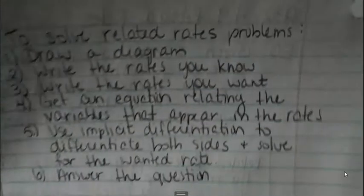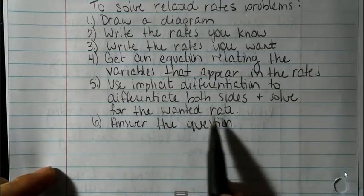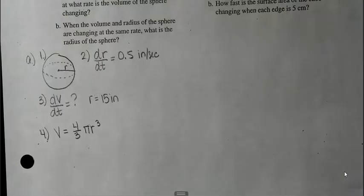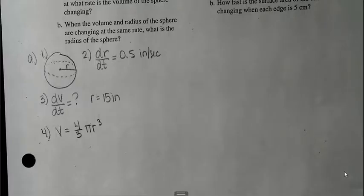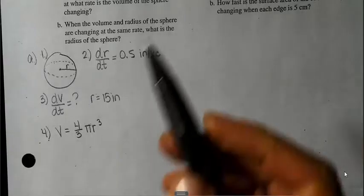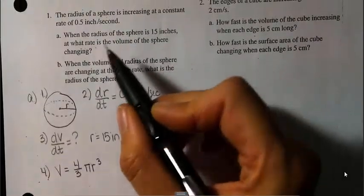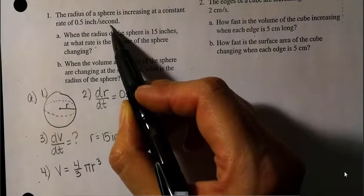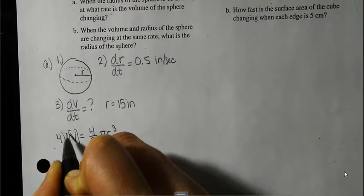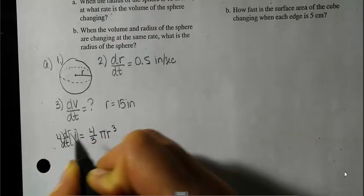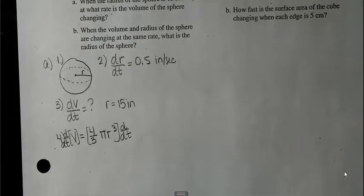Step five: use implicit differentiation to differentiate both sides with respect to time. I'm taking the derivative with respect to time because the rate is per second — that's what I'm missing. I need to know, when the radius is 15 inches, what is the rate of change of volume?